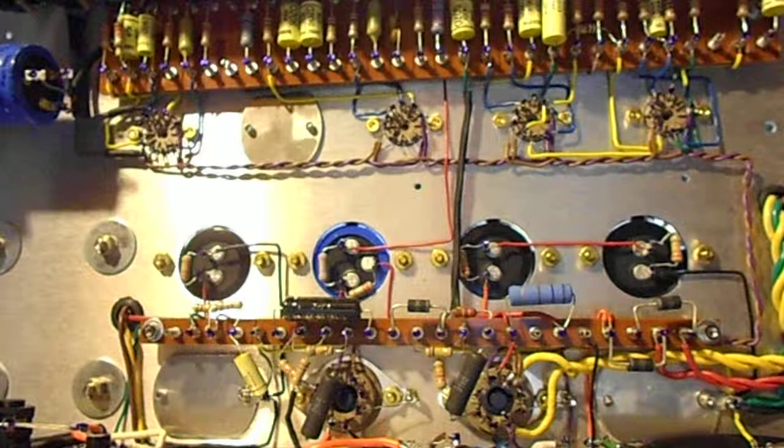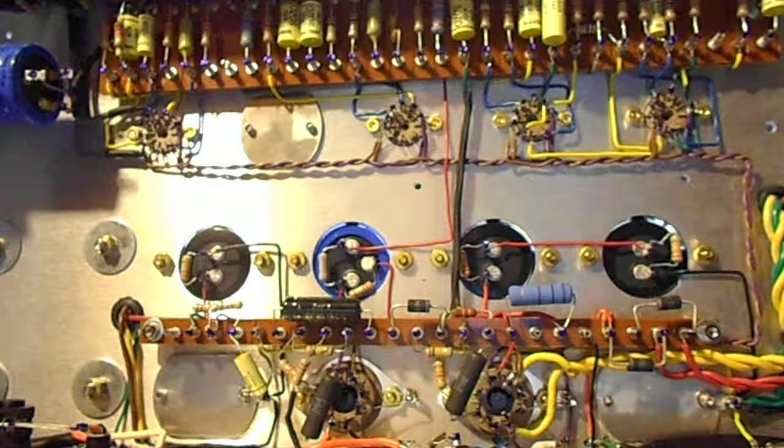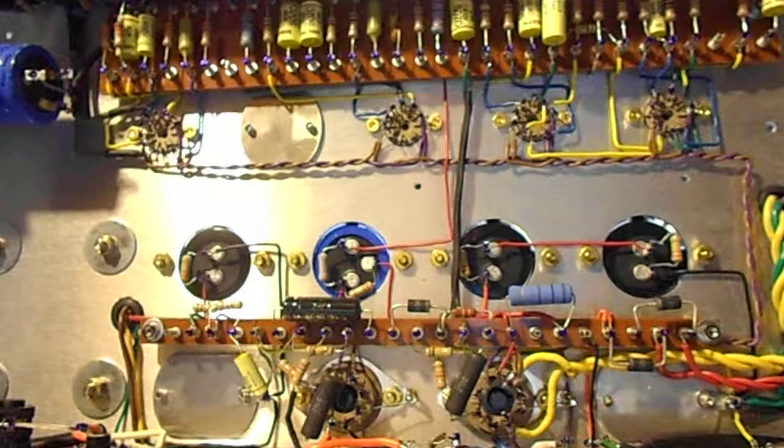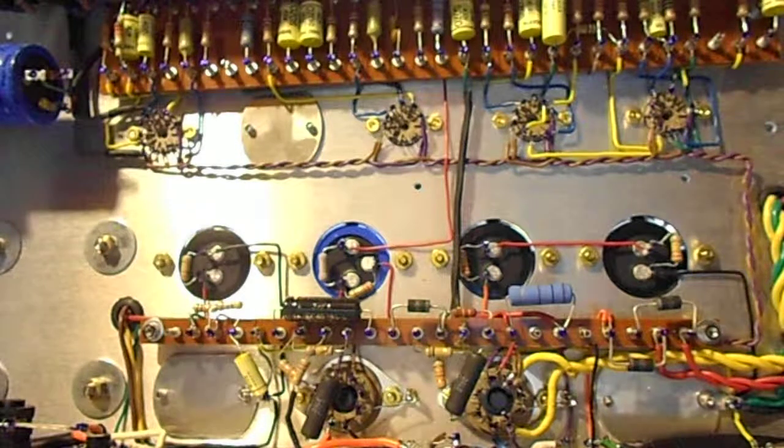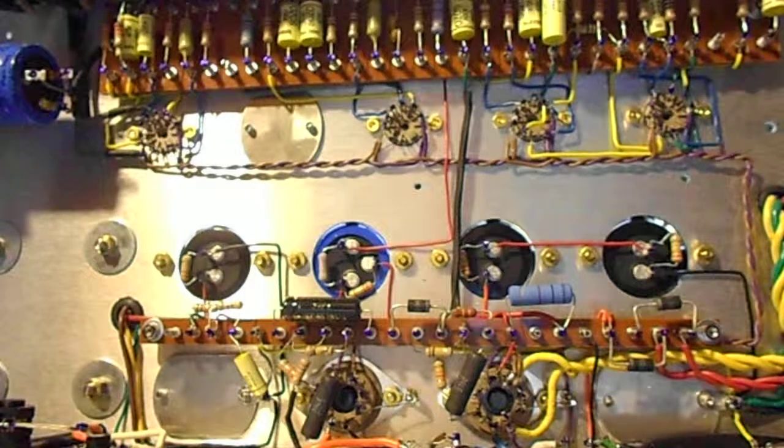I still believe that biasing based on the idle current at the anode or plate is the ideal way to bias your amp.